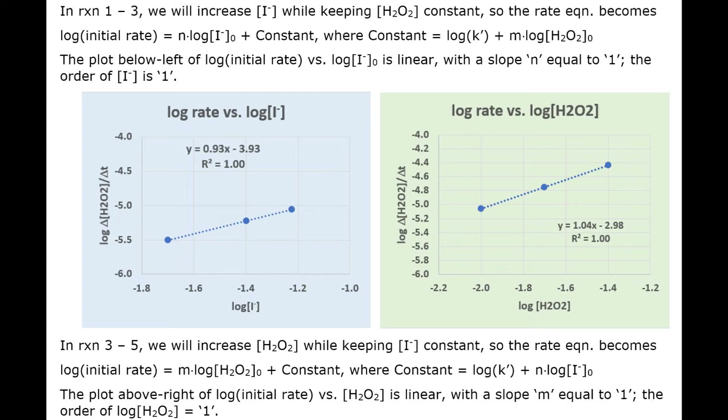R² is 1 and the slope is 1, again indicating a first order relationship between reaction rate and the concentration of peroxide. And so the reaction then appears to be second order overall.